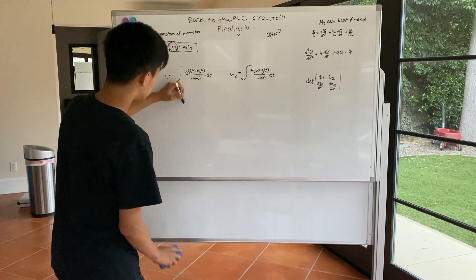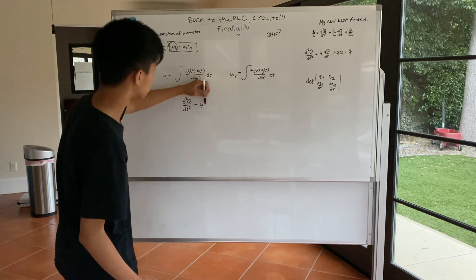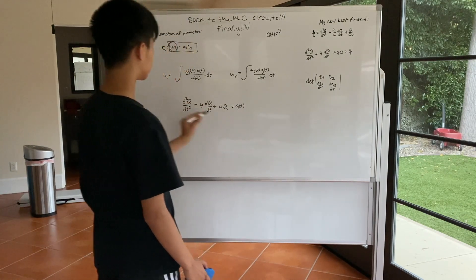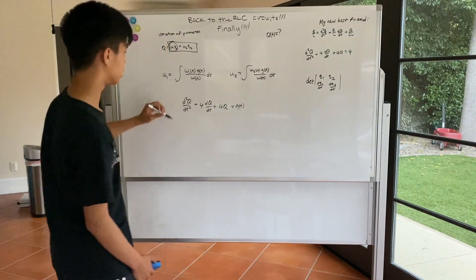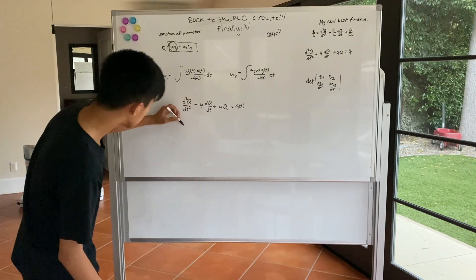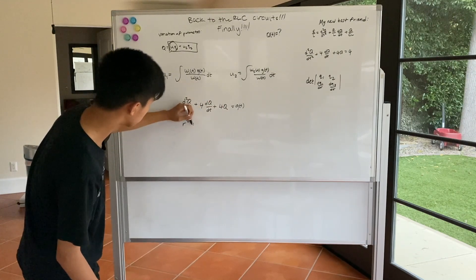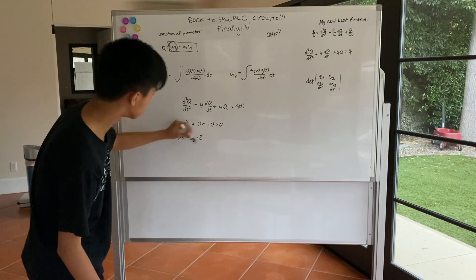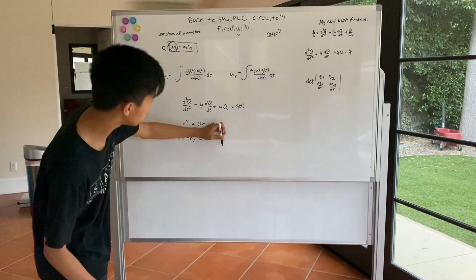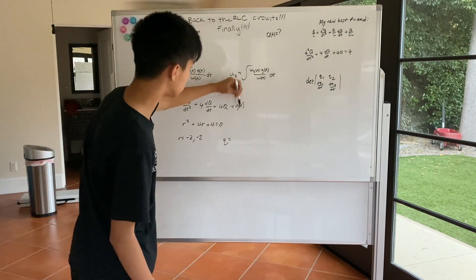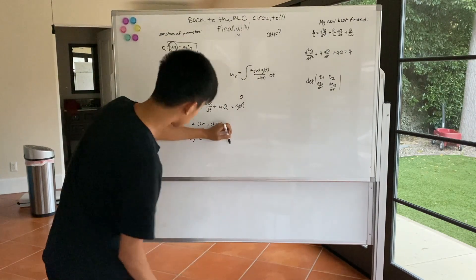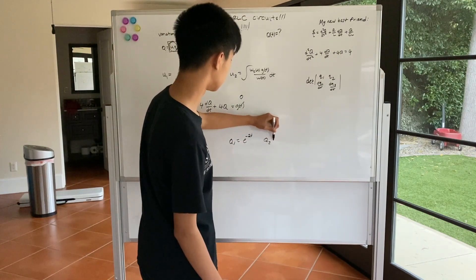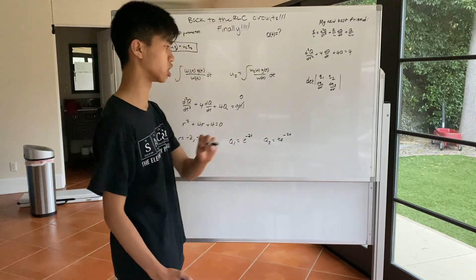So d squared Q dt squared plus 4 dQ dt plus 4Q equals G of T. So what Q1 and Q2 will be is we can just use the characteristic equation here, R squared plus 4R plus 4 equals 0. R is negative 2 and negative 2. So our Qs will be the solution to this differential equation if G of T is 0. So we could say that Q1 is equal to e to the negative 2t, and then Q2 will be T e to the negative 2t if you remember my lesson on repeated roots.